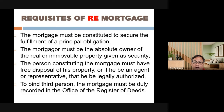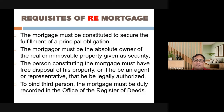The mortgagor must be the absolute owner — the title must be in their name. You cannot mortgage a property not yet registered in your name, though under a Special Power of Attorney you can mortgage as an attorney-in-fact. Third, the person constituting the mortgage must have free disposal of the property. Fourth, to bind third persons, the mortgage must be duly recorded with the Register of Deeds — registration serves as notice by operation of law.